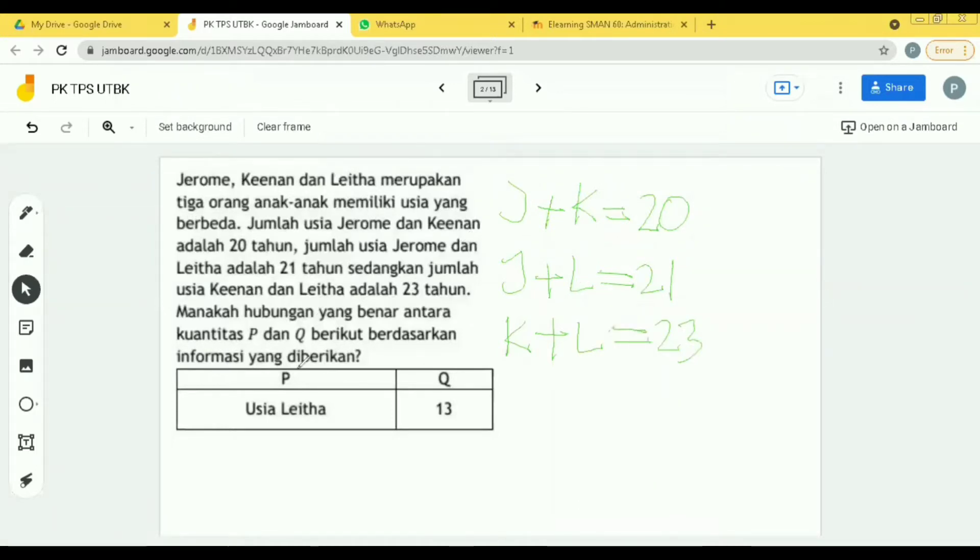Oke. Kita fokus ke kotak di situ. Kita fokus ke kotak yang di sini. Di sini yang dimisalkan dengan P itu adalah usia Laita. Berarti tujuan kita adalah mencari nilai L aja. Kenapa kita mencari L? Supaya kita tahu. Misalkan kalau ternyata P-nya usia Laita itu misalkan 17, berarti kan kita tahu, oh berarti antara P sama K, P lebih besar daripada K. Maka jawabannya yang A. Gitu tujuannya. Maka kita tidak perlu tahu usia si Jerome, kita tidak perlu tahu usia si Kinan. Kita hanya perlu tahu usia si Laita.